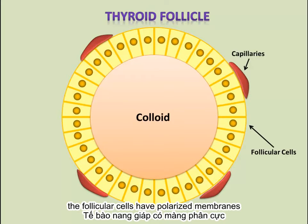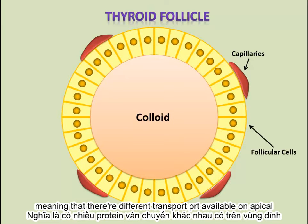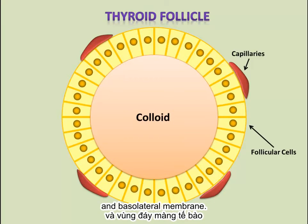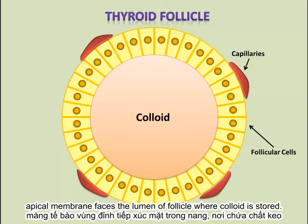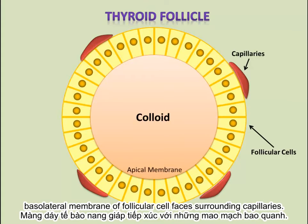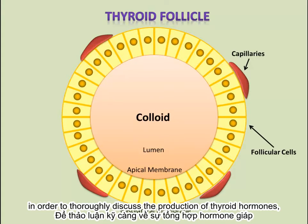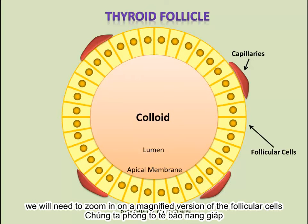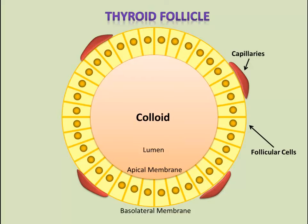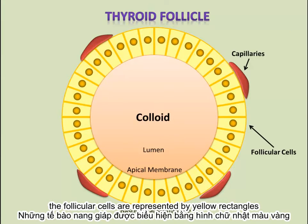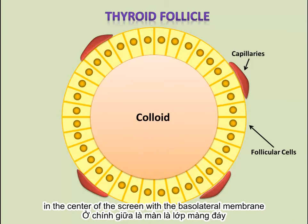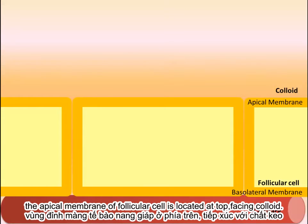The follicular cells have polarized membranes, meaning that there are different transport proteins available on the apical and basolateral membranes. The apical membrane faces the lumen of the follicle where the colloid is stored. The basolateral membrane of the follicular cell faces the surrounding capillaries. In order to thoroughly discuss the production of thyroid hormones, we will zoom in on a magnified version of the follicular cells. The follicular cells are represented by yellow rectangles in the center of the screen, with the basolateral membrane facing down towards the capillary, and the apical membrane facing the colloid at the top.